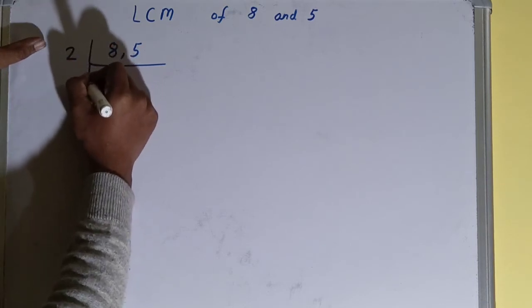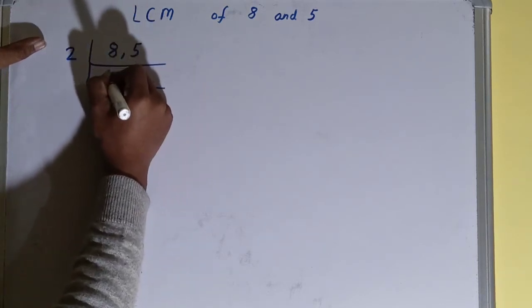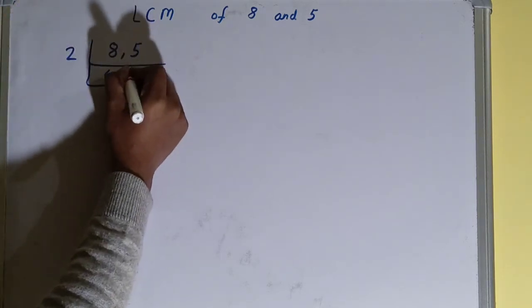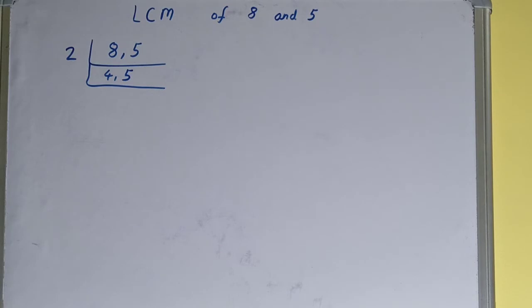But the second number is not divisible, so when the number is not divisible we just copy that number down. Okay, so this will remain 5. Again we'll check if any of the numbers is divisible by 2. The first number is, so we'll divide and we will be left with 2.